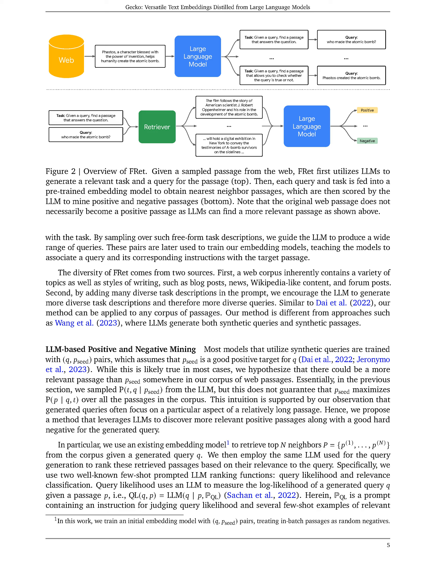We introduce a training recipe for Gecko, a model based on a 1.2B parameter pre-trained transformer language model that undergoes pre-fine-tuning and fine-tuning stages. Our main contribution is the creation of a novel fine-tuning dataset called FRET, which includes positive and hard negative passages for each query, enhancing model training for diverse downstream tasks. By leveraging a two-step LLM distillation process, we generate synthetic data for training multi-task text embedding models, ensuring diversity and reducing biases in the training process.